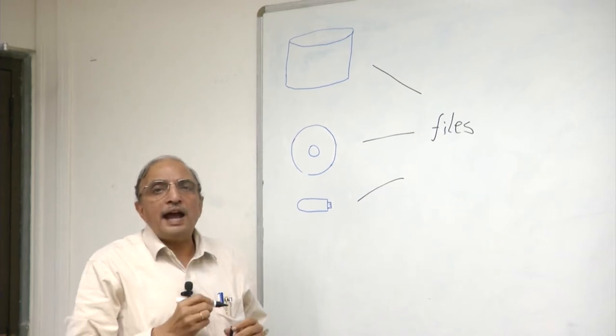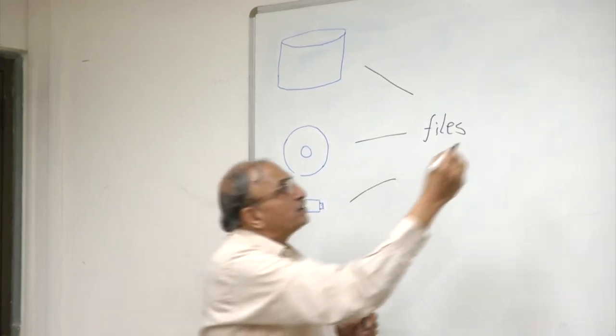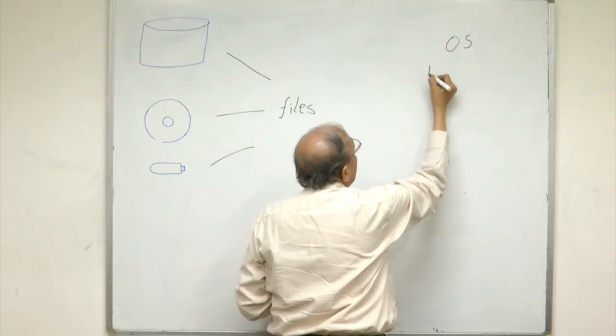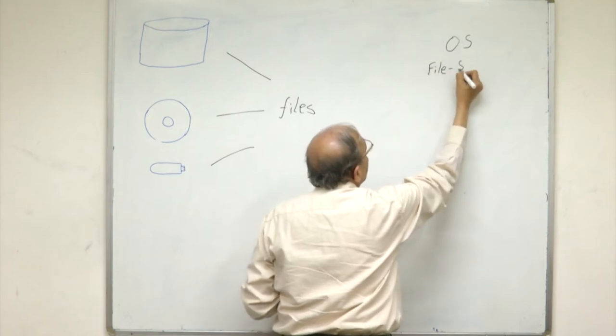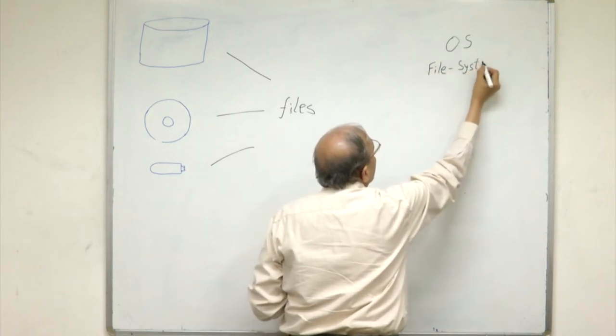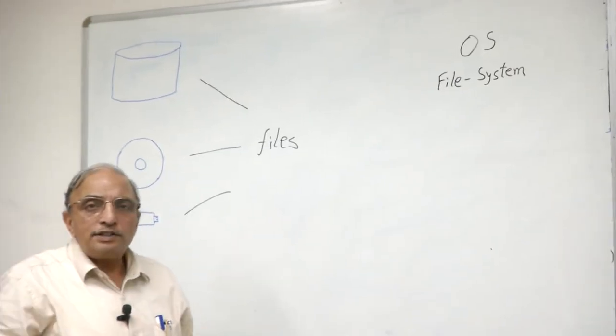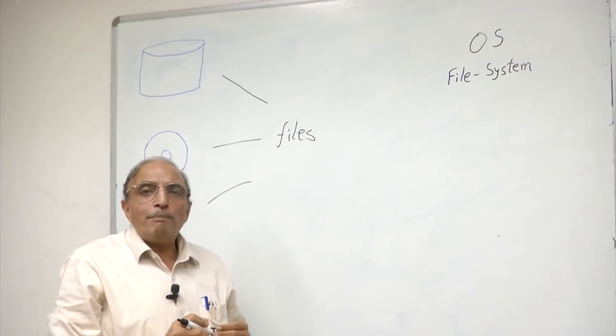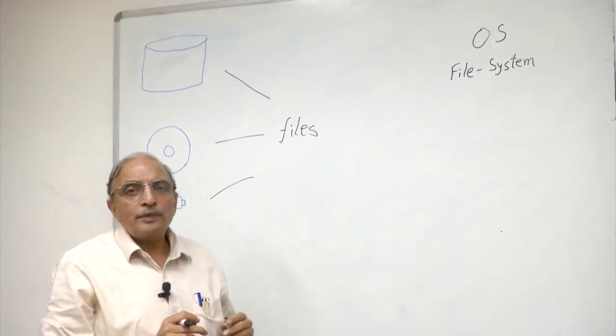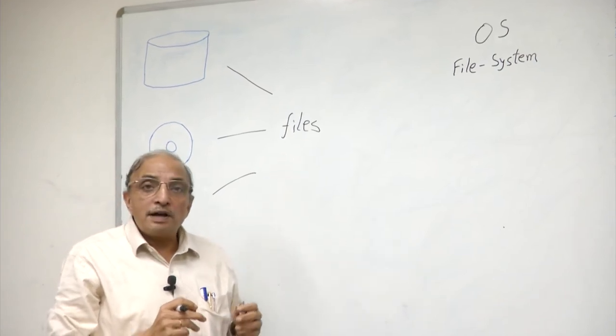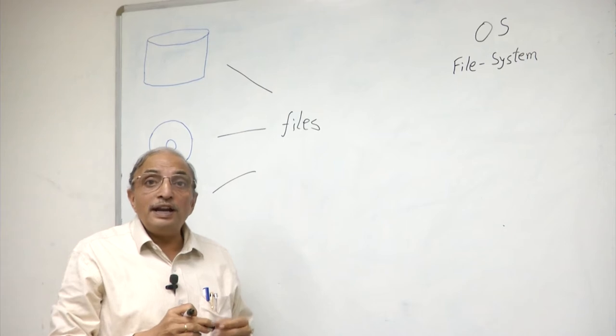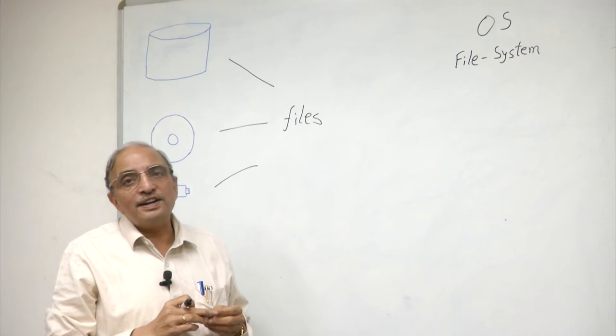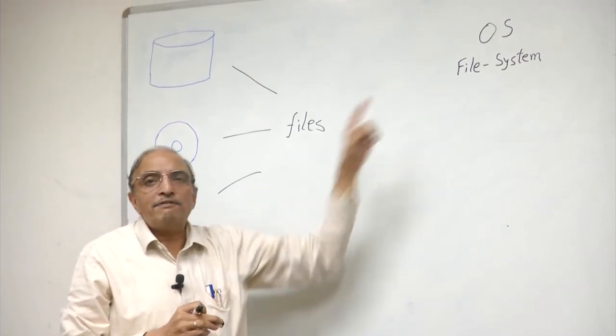These files are actually handled by the operating system. In particular, a component of the operating system called the file system. The operating system has enough software to be able to manage the files on external storage. The operating system has a convention of how the files should be named, what should be their properties, and how they are to be organized on external devices. All of this is handled by the file system.